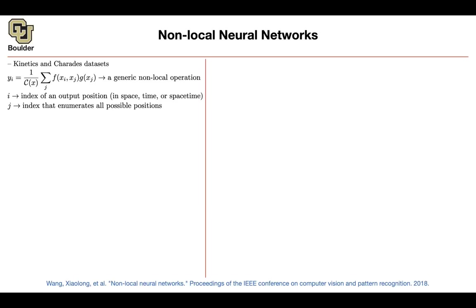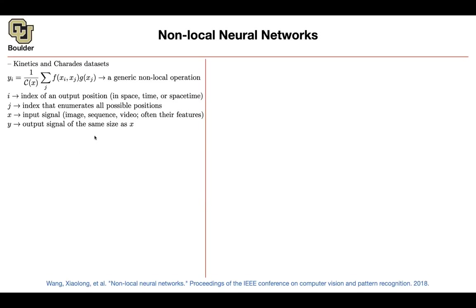j is similar to i, but what we want is for any pixel in the output to pay attention to all other pixels — not only in space but also in time. So i is the output position, and we want that output position to pay attention to all possible positions in an image or video. x is our input signal, which could be an image, a sequence like sentences or speech, or a video. These are their features — for example, word embeddings or feature maps from a convolution layer. y is the output signal; it will have the same spatial and temporal resolution as x.